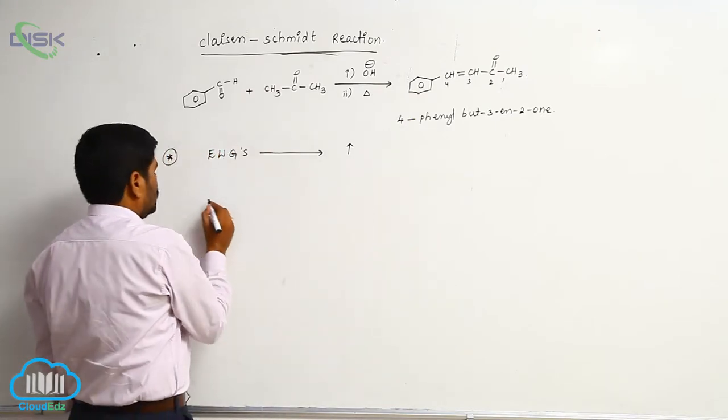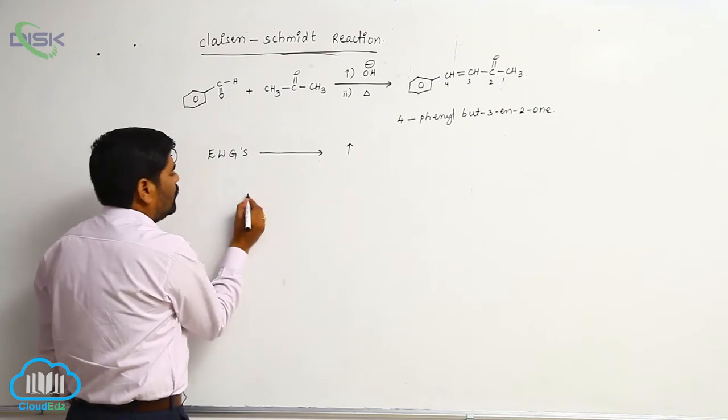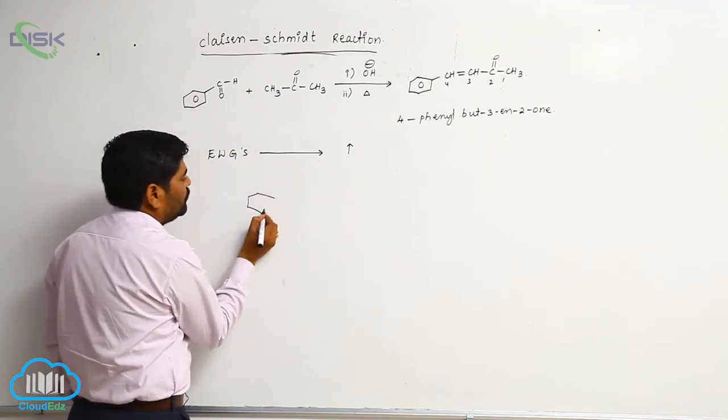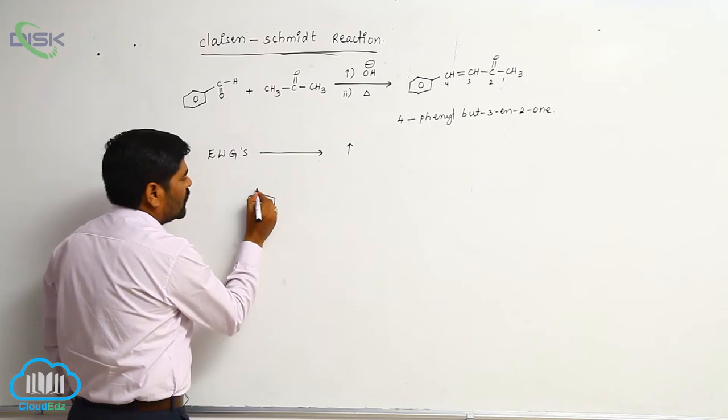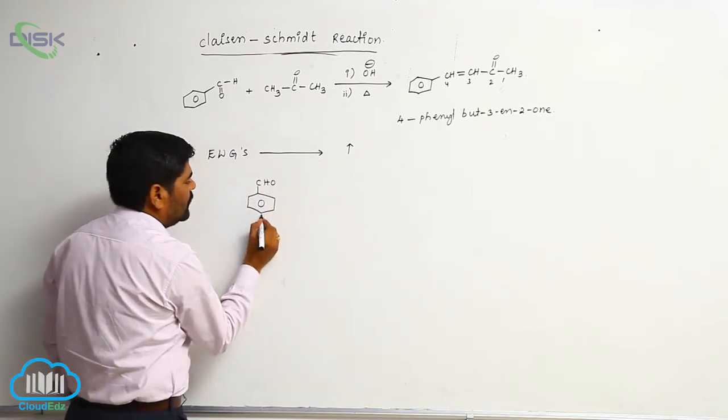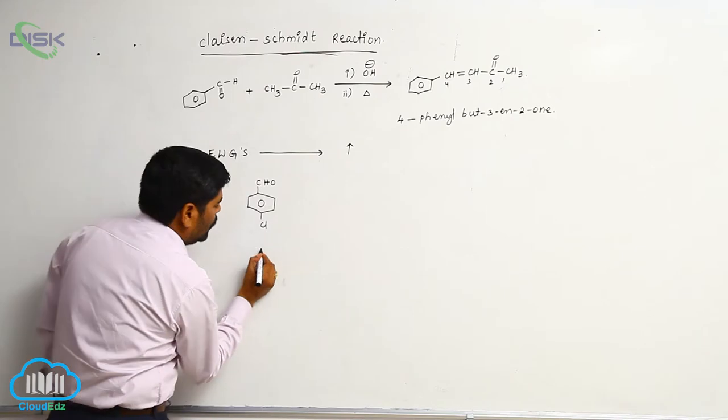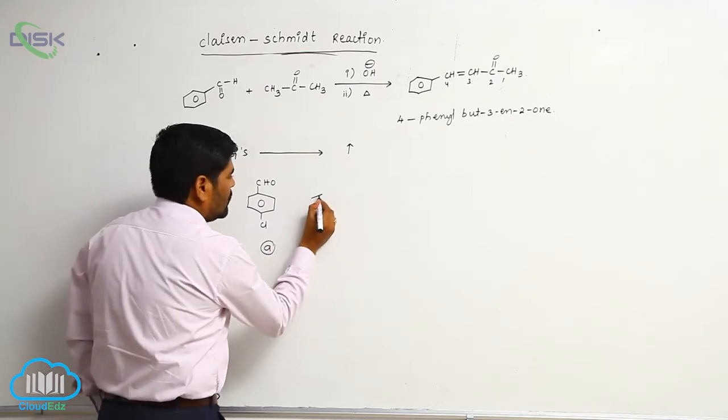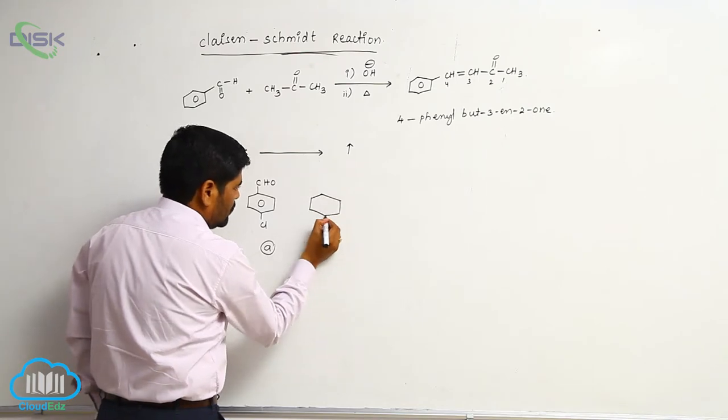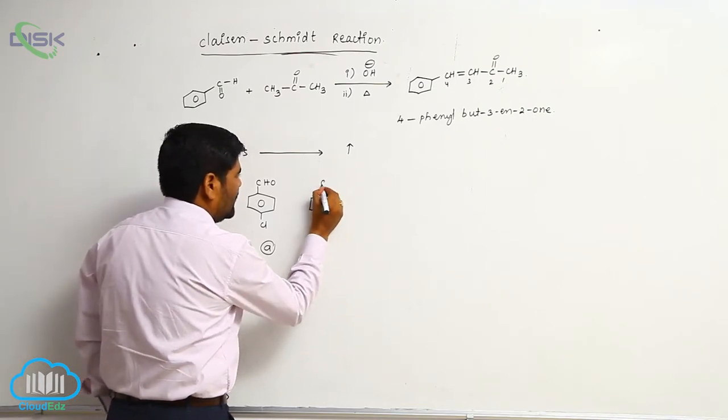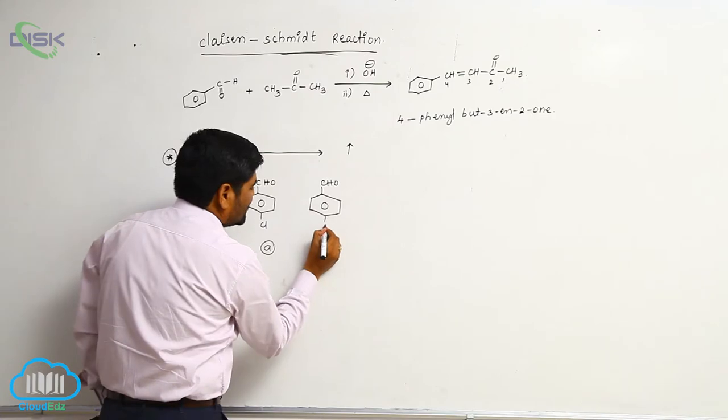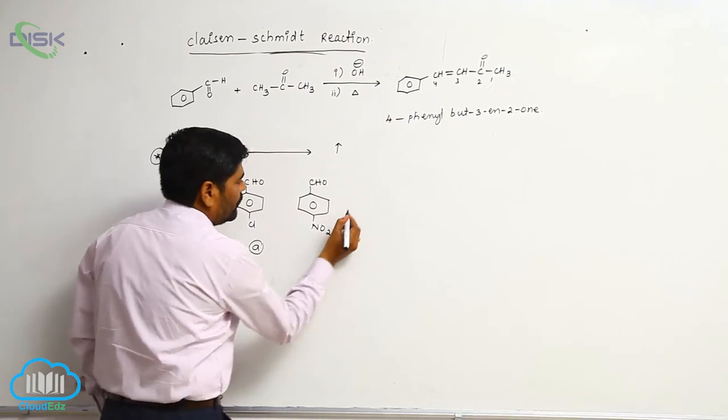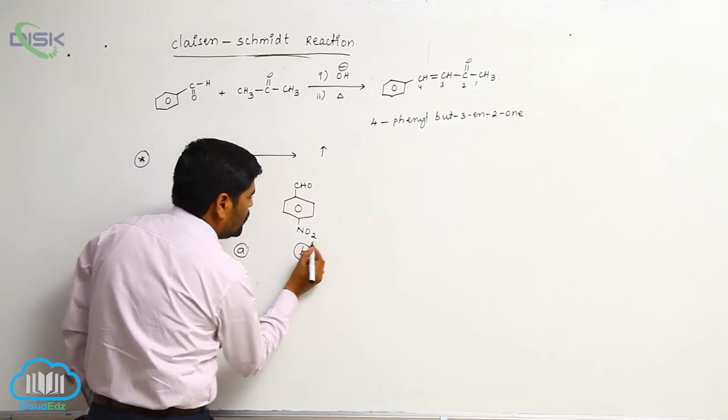Now, I am giving four compounds to you. First, aldehyde with chloro substituent, this is A. Second one, aldehyde with nitro group, this is B.